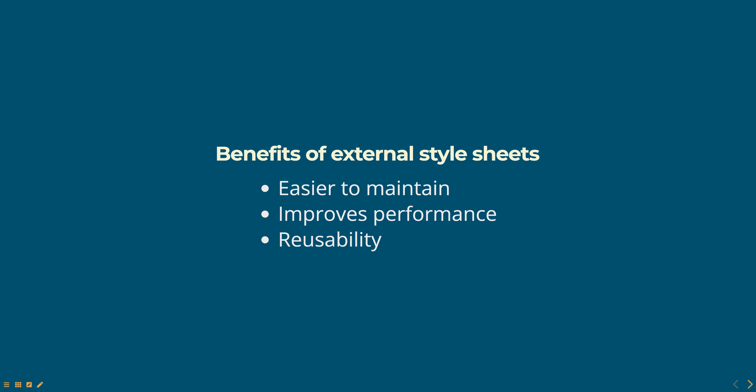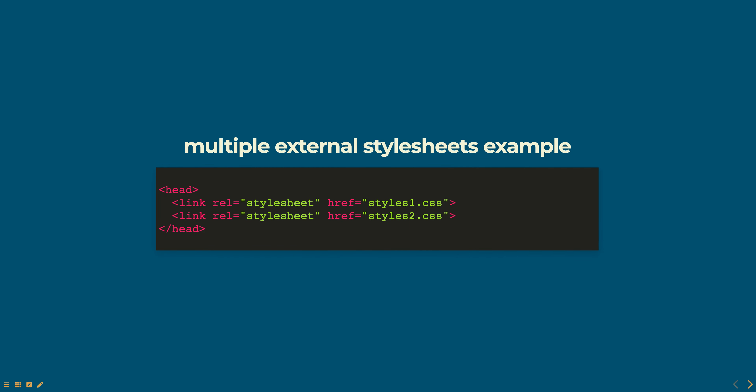It's also possible to use multiple external style sheets for different sections of the website. In this example, two external style sheets are linked to the HTML document: styles1.css and styles2.css. This allows you to apply different styles to different sections of the website, or to use different style sheets for different media types such as print or screen.